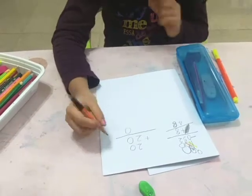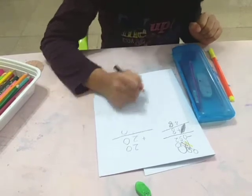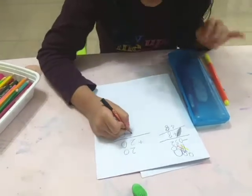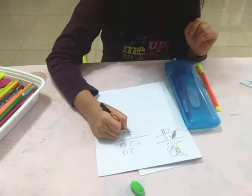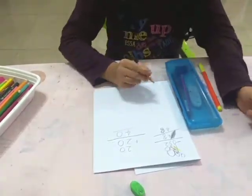Now, 0 plus 0 is equal to 0. Now, we've got 0. Now, let's do 2 plus 2. Now, 2 plus 2 is equal to 4. So, let's write 4. Now, let's blend these together. 4 plus 0 is equal to 40.